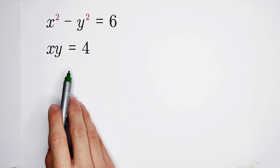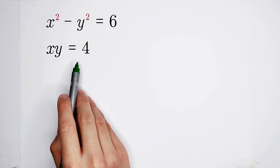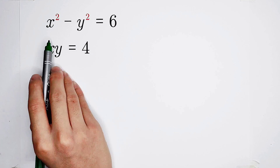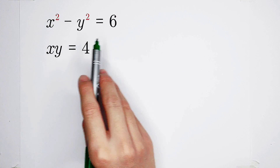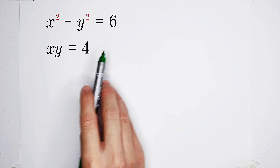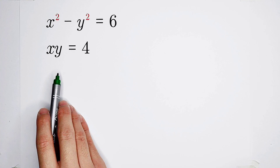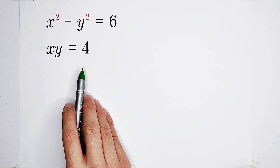Find the values of x and y from this system of equations: x squared minus y squared equals 6, and x times y equals 4.